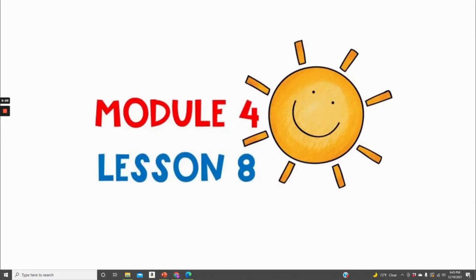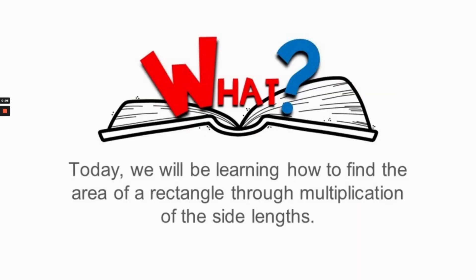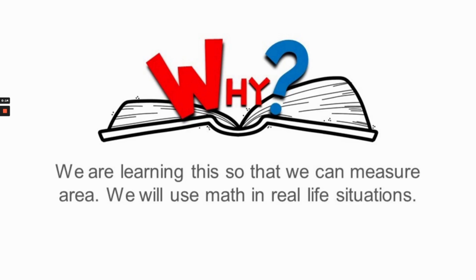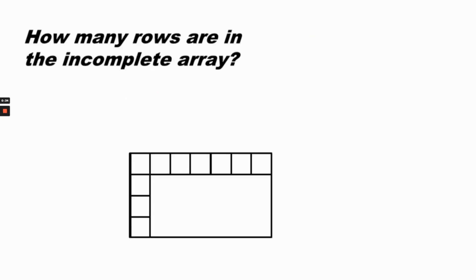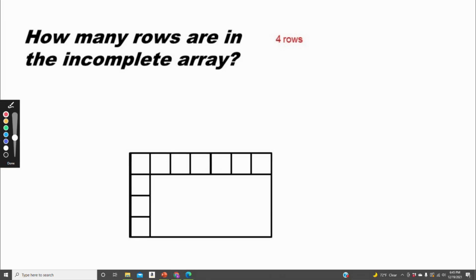Welcome to Module 4, Lesson 8. Today we will be learning how to find the area of a rectangle through multiplication of the side lengths. We are learning this so that we can measure area, and we'll know that we're successful today when we can use multiplication or division to find the unknown side length. How many rows are in the incomplete array? There are four rows — remember, rows are horizontal and go from left to right.